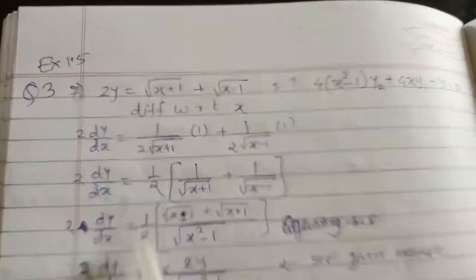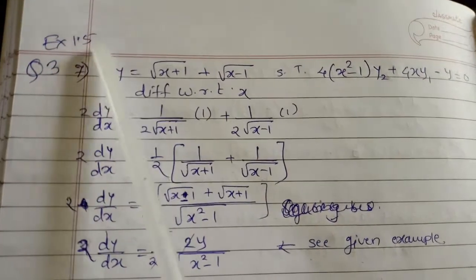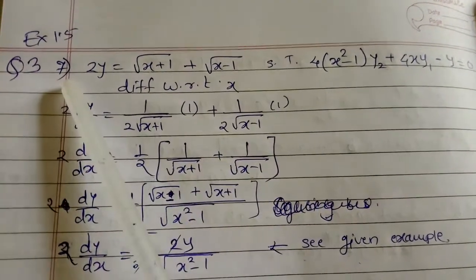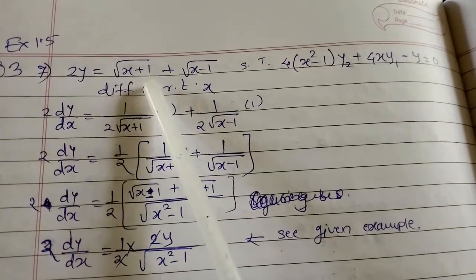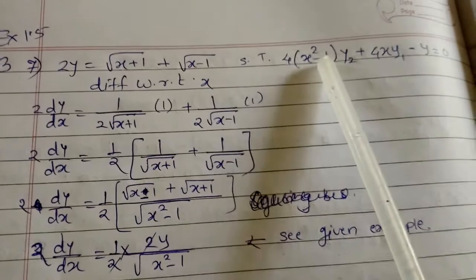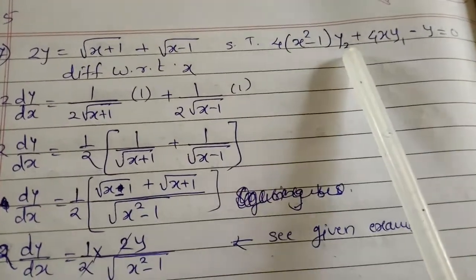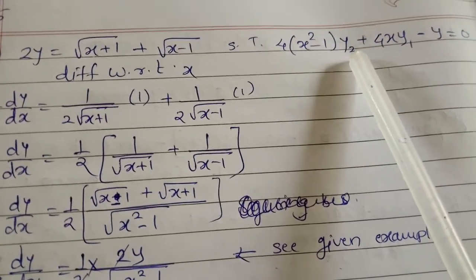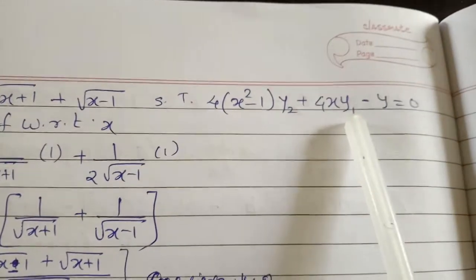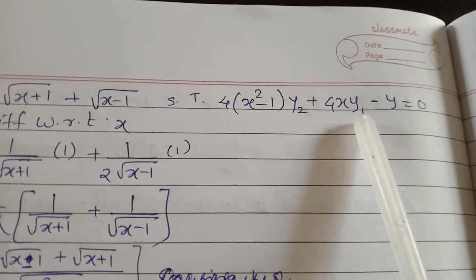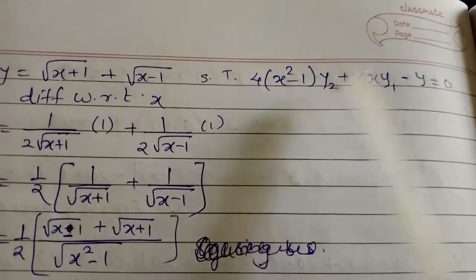Hello students. I am going to continue with the chapter differentiation of 12th standard, exercise 1.5, question number 3 and example number 7. The example is: 2y equals root(x+1) plus root(x-1), then show that 4(x²-1)y₂ plus 4xy₁ minus y equals 0. Note that y₂ is the second-order derivative d²y/dx² and y₁ is the first-order derivative dy/dx.